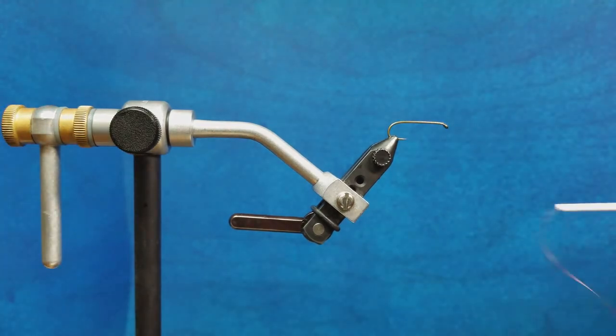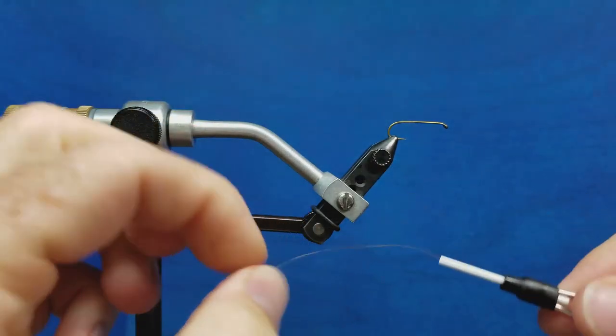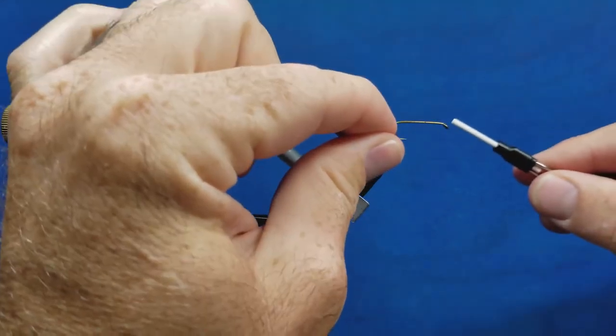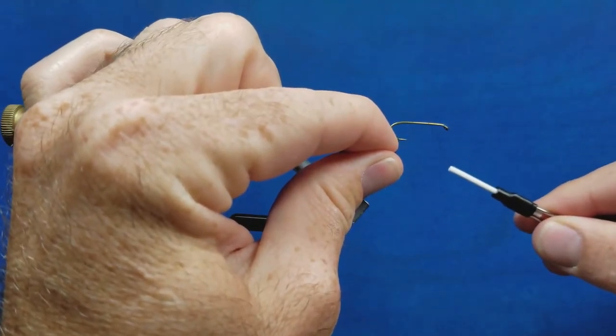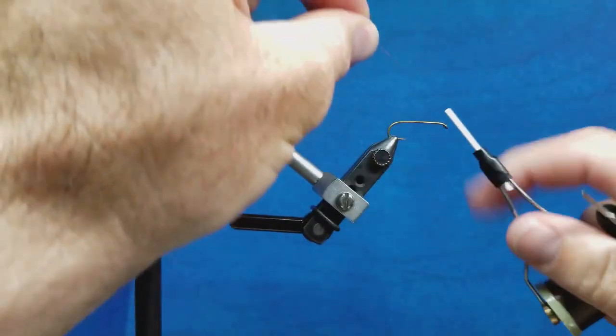The last point we're going to look at in this video is how to properly secure your thread to the hook. So I'm a right-handed tyer. To start the thread onto the hook, I'm going to set the thread on top of the shank.